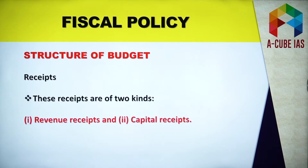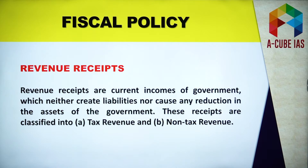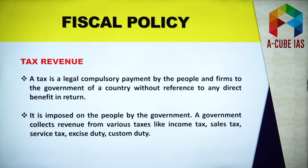Now let's try to analyze the structure of the budget — this is very important and you must have clarity regarding the structure of the budget, as there might be a potential question in your prelims. It has two components: first is receipts, and second is expenditure. Revenue receipts are current incomes of government — they do not create any liabilities and do not cause any reduction in the assets of the government. Revenue receipts can be classified into tax revenue and non-tax revenue.